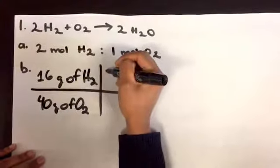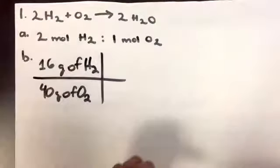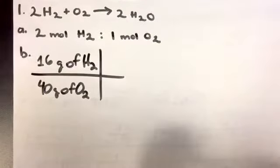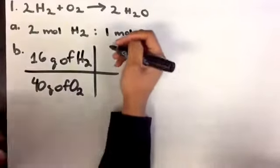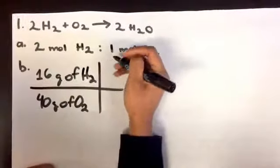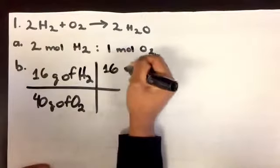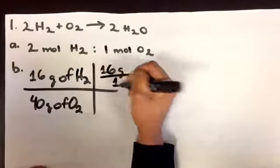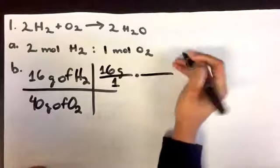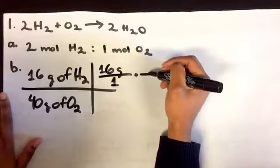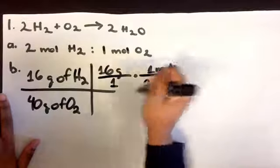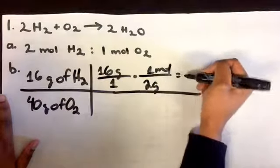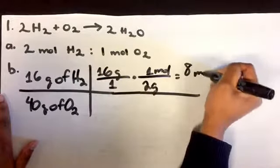So they give you 16 grams of H2 and 40 grams of O2. In order to find the moles that can be yielded from 16 grams of H2, you have to find the molar mass of hydrogen and multiply it by the amount that is given, and you would get 8 moles of H2.